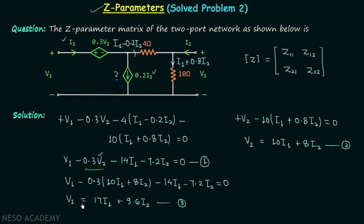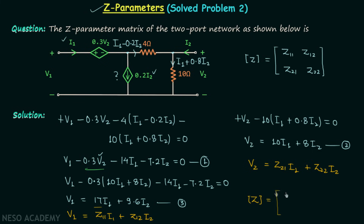Now we compare with the standard Z-parameter equations: V1 = Z11·I1 + Z12·I2 and V2 = Z21·I1 + Z22·I2. From equation 3, Z11 = 17 and Z12 = 9.6. From equation 2, Z21 = 10 and Z22 = 8. So the Z parameter matrix is [17, 9.6; 10, 8]. This is our answer.